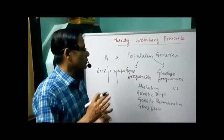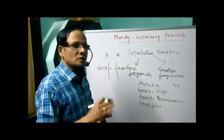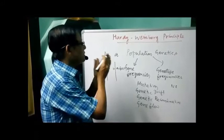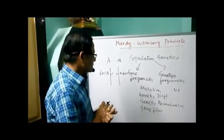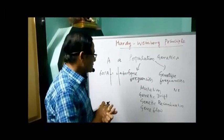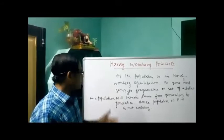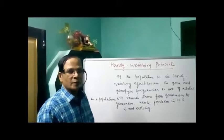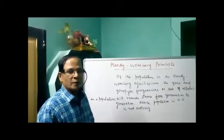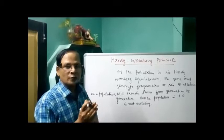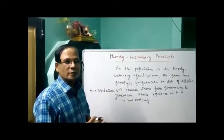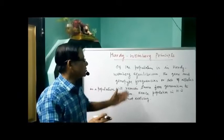Evolution results from change in allele frequencies over time. In Hardy-Weinberg equilibrium, there is no change in gene frequencies or genotype frequencies, so it is in a constant state. Hence, a population in Hardy-Weinberg equilibrium is not evolving. If the population is in Hardy-Weinberg equilibrium, gene and genotype frequencies remain the same from generation to generation, and there is no formation of new species.